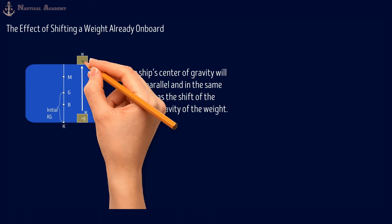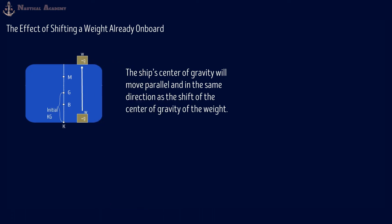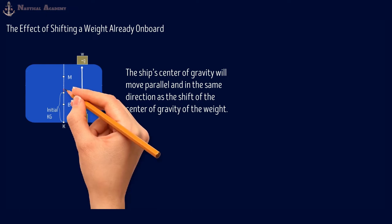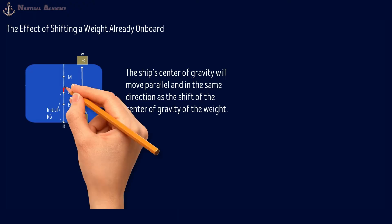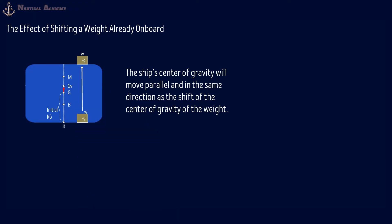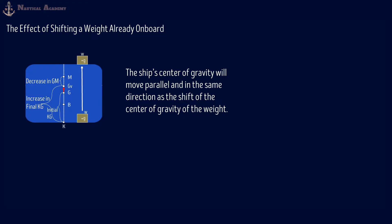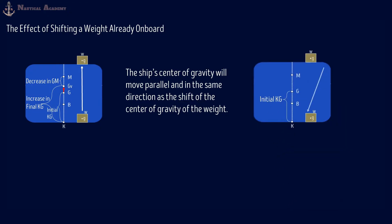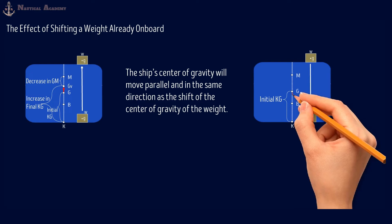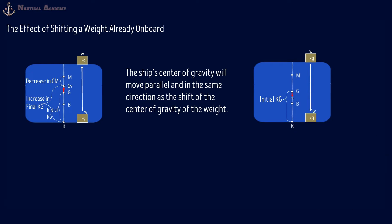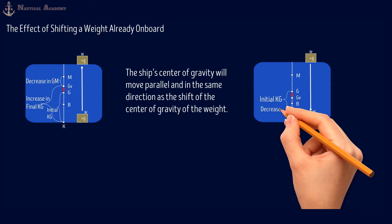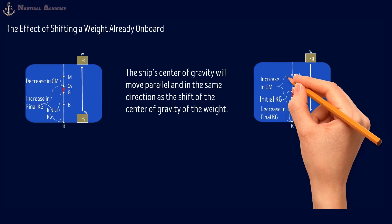Let us label the center of gravity of the weight or cargo as small letter g. So from the initial position of G, it will move upward, and let us assume that the new G will be here, marked as GV, to emphasize the vertical shift of G. In this case, there will be an increase in KG and a decrease in GM since our metacenter is above G. On the other hand, if a weight is shifted from the main deck to the lower hold, G will move downward in parallel and in the same direction as the shift of the center of gravity of the weight being shifted. In this case, our KG will decrease and there will be an increase in GM since our metacenter is above G.